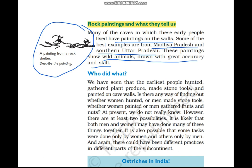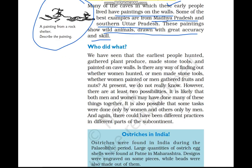Our next topic is 'Who Did What.' Hunter-gatherers used to hunt animals, gather plant produce, create stone tools, and paint on cave walls. But what is the way we can know which work was done by whom?